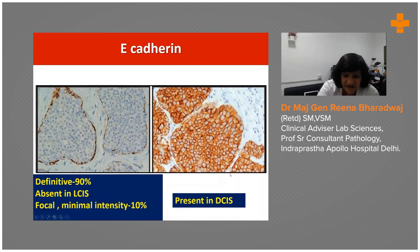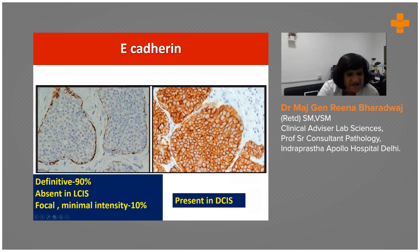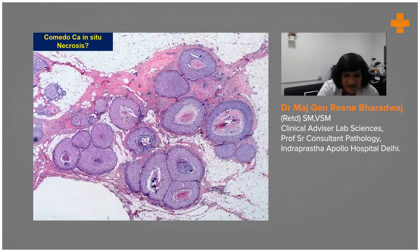If you still can't make up your mind, you might want to use e-cadherin. E-cadherin is always present in ductal lesions, very nicely brought out, and it is absent in lobular lesions. This is a low-grade DCIS on the right and an LCIS on the left — absent, and even if there is occasional focal positivity, it will be of very minimal intensity.